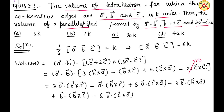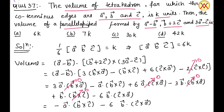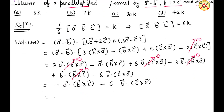Several terms equal zero: 3a · (b × a) = 0, 6a · (c × a) = 0, 3b · (b × a) = 0, and b · (b × c) = 0, since a scalar triple product with a repeated vector vanishes. The remaining terms are: -a · (b × c) - 6b · (c × a), which can be written as minus the box product [a, b, c] minus 6 times the box product [b, c, a].